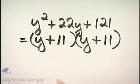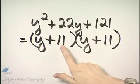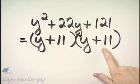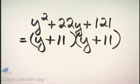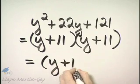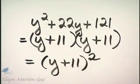Let's check. First times first is y squared. Outside product, that's 11y plus 11y. That's 22y. Last times last is 121. If you'd like, you can then certainly write this as y plus 11 quantity squared.